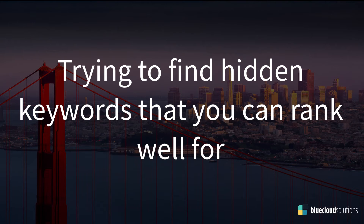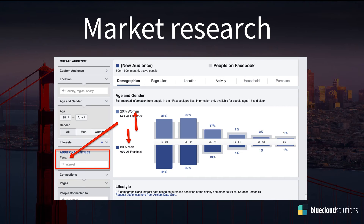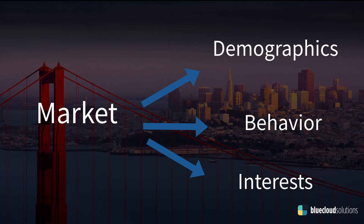Now let's define market research. This screenshot is from Facebook Audience Insights, which we'll link to below — this is where you want to go for market research. It covers almost everything you need. On the left, I typed in 'Ferrari' as an interest. What Facebook Audience Insights does is give you all the information about people that fit the criteria you put in. For example, Ferrari people are 80% men and 20% women — disproportionately higher men than the Facebook average, as you'd expect.